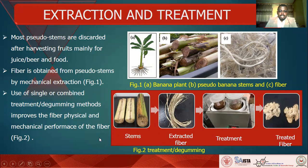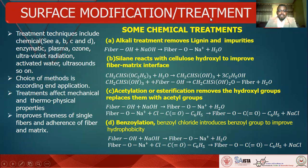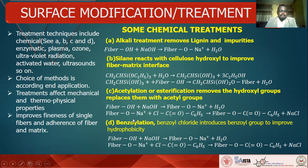Surface modification or treatment can be done using a variety of methods — some of them are chemical, some are enzymatic, plasma, ozone, ultraviolet radiation, activated water, ultrasound, and so on. The choice of method depends on the end application. These treatments affect the mechanical and thermophysical properties and also improve the fineness of single fibers and the fiber-matrix interface, as seen in Figure 2.